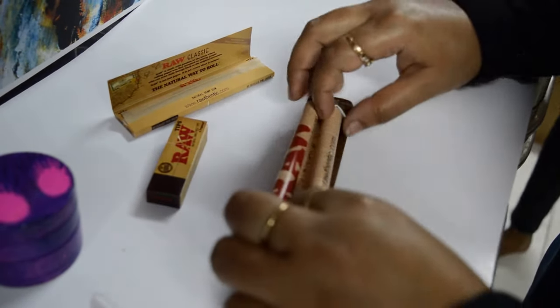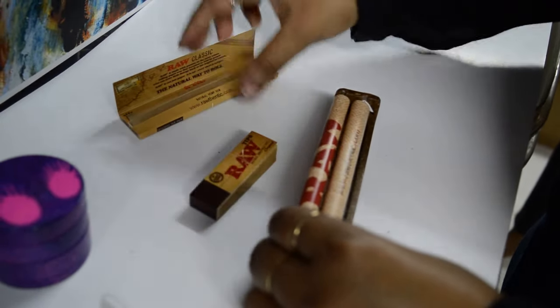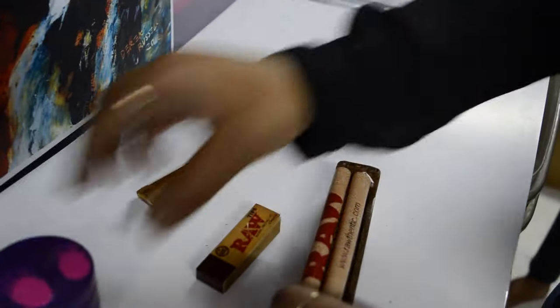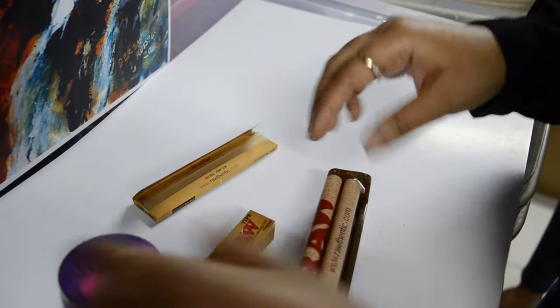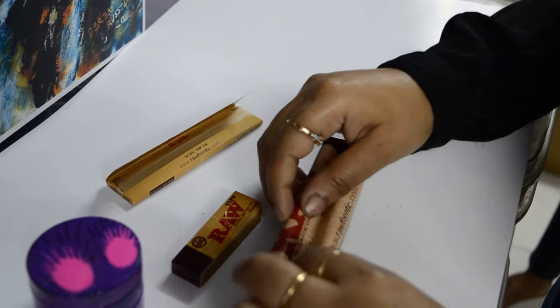For making cigarette, you need one machine, a raw paper and a cigarette paper, and some tobacco. Let's open it.